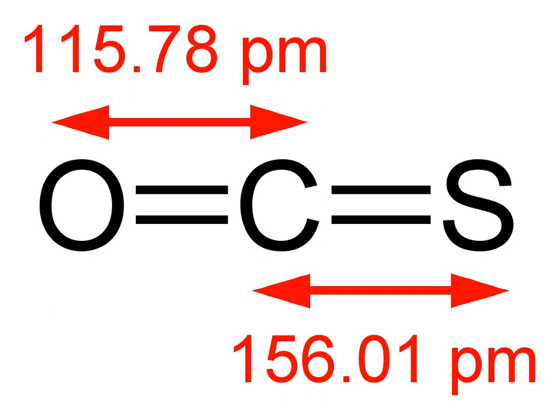Carbonyl sulfide is the most abundant sulfur compound naturally present in the atmosphere at 0.5 ± 0.05 ppb, because it is emitted from oceans, volcanoes and deep sea vents.